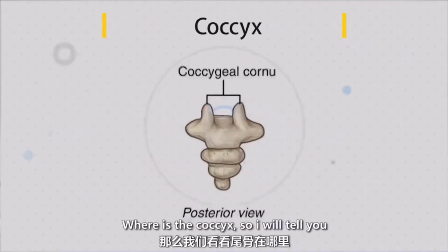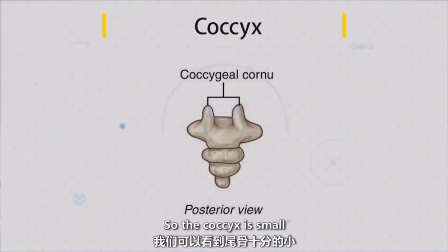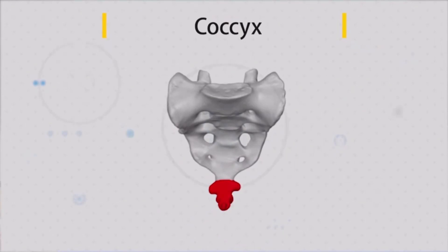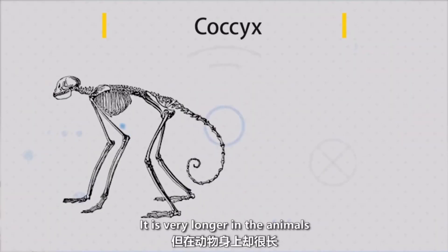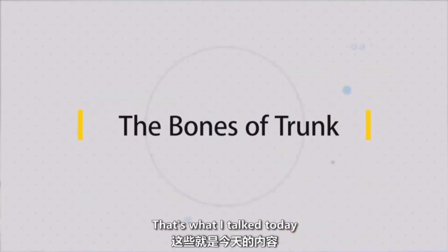The coccyx is at the bottom. The coccyx is very small — it is the vestigial tail bone. As everybody knows, monkeys have a very long one. That's what I said today — these are the bones of the trunk. Thank you.